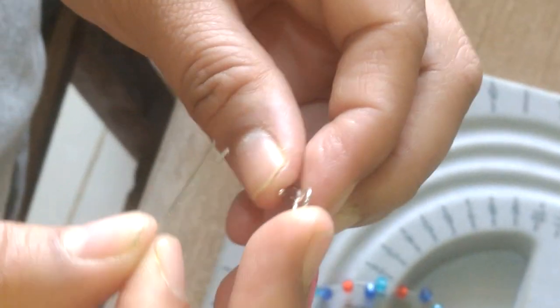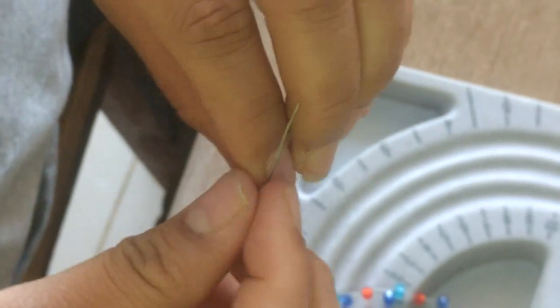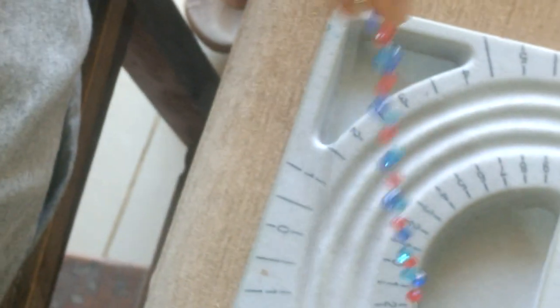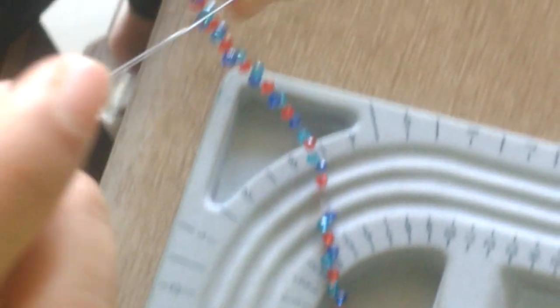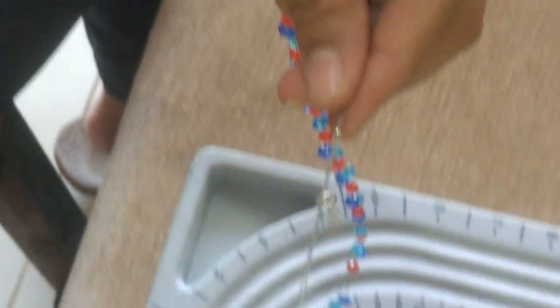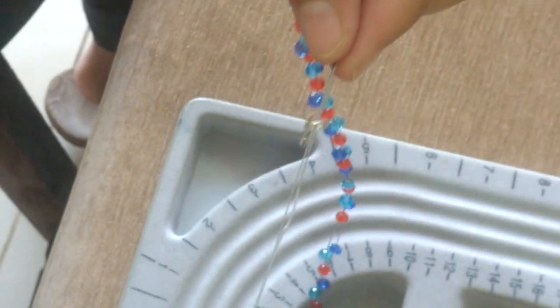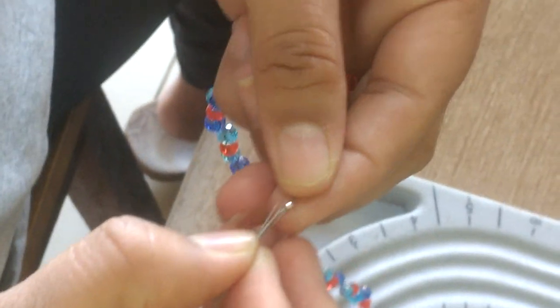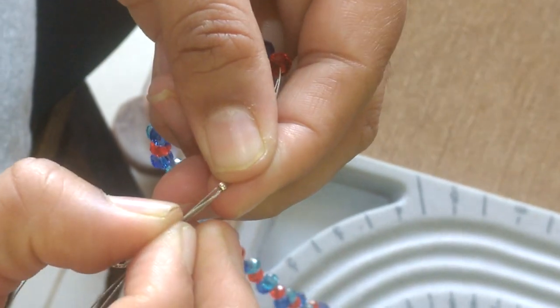Here I put this crimp bead and now I'm going to put this clasp which is the beginning clasp, the hook. Again the procedure is going to be like this and by overlapping it I'm going to put this.